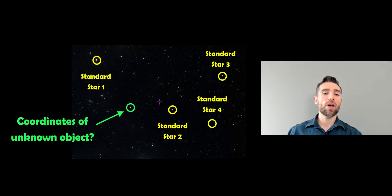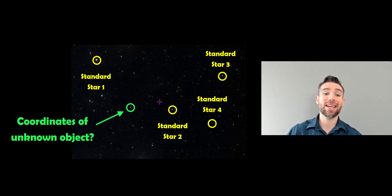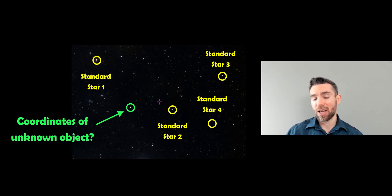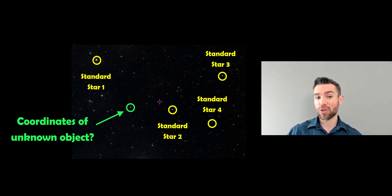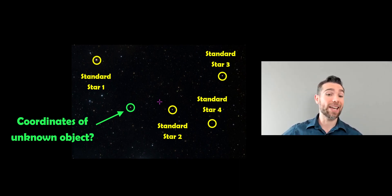Welcome to this video where I'm going to work through an example of how you can get the sky coordinates of an unknown object that you've taken a picture of. That will be known as astrometry, and we're going to work through that and show you how you can actually get your coordinates of that object in right ascension and declination.